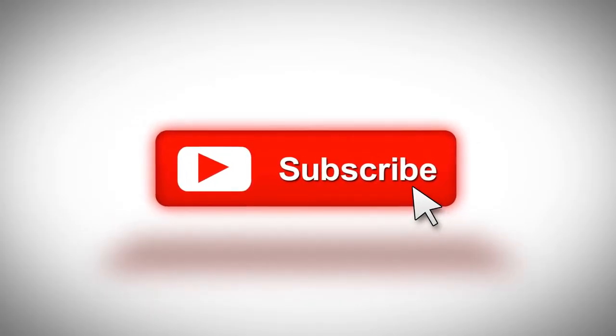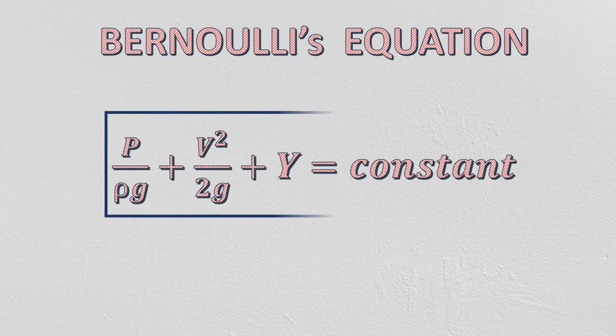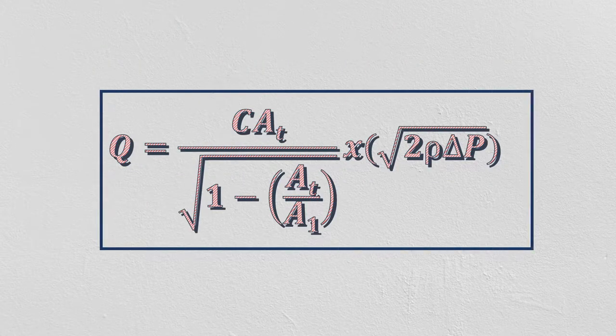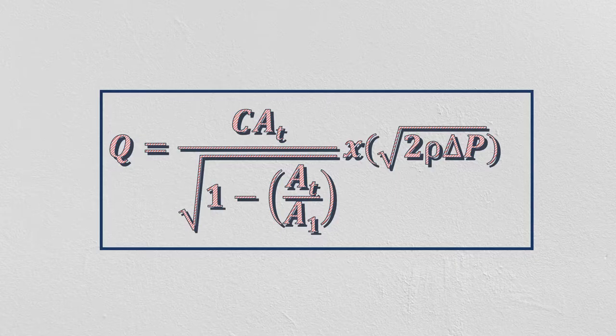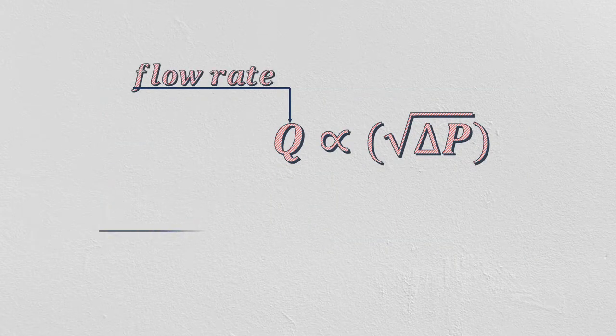Before we start, I request you to subscribe this channel and share this video. Restricted orifice works on Bernoulli's principle. As per Bernoulli's equation, this equation can be derived. Here you can see that the mass flow rate is directly proportional to the square root of the pressure differential across the orifice.